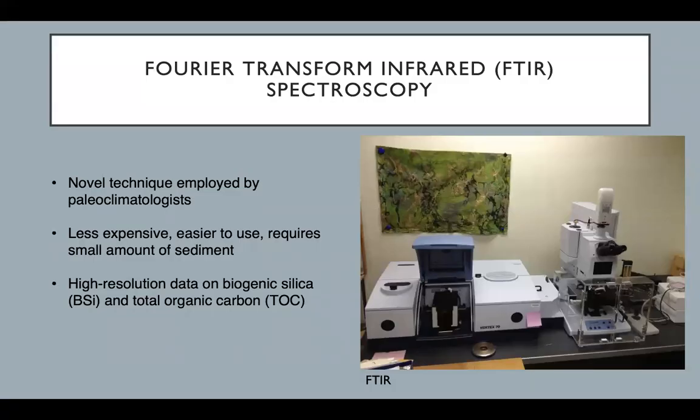There are currently a few ways to extract BSI and TOC from lake core sediment samples, but these techniques require a lot of sediment, are expensive, and prone to human error. Some take more time but provide high resolution data, and others are faster but provide low quality data. Fourier transform infrared spectroscopy is a novel technique and a happy medium between all of these methods, providing high resolution data on BSI and TOC while also being cost effective, requiring a small amount of sediment, and being a relatively fast process.